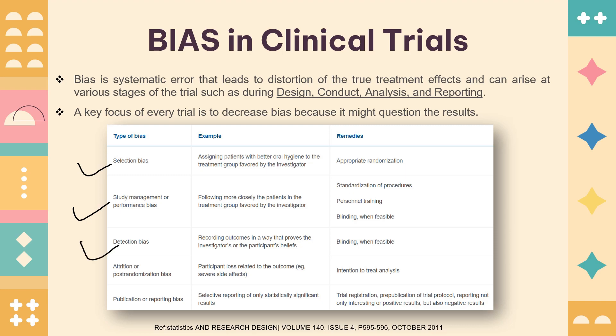The third type is detection bias — recording the outcome in a way that proves the investigator's or participant's belief. If a participant believes they are in the treatment group, they may behave differently, and the investigator who knows the treatment would also behave differently, negatively impacting treatment data analysis. To rectify this, we again perform blinding wherever feasible.